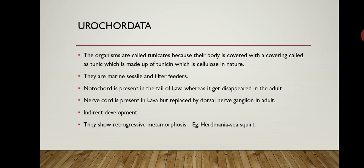Progressive metamorphosis means the adult is advanced and the larva is not. So in progressive metamorphosis the adult is the advanced form. In Urochordata it is retrogressive metamorphosis, which is the opposite — the larva is the more advanced form.